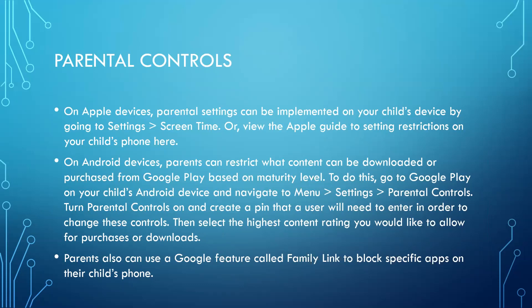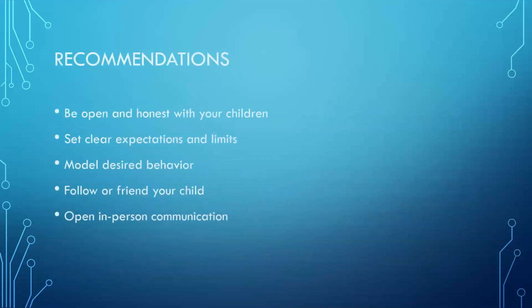Parents can also use a Google feature called Family Link to block specific apps on their child's phone. Now, I will say about restricting them — a lot of parents will say they're not going to let their child use any apps, but chances are their friends do, and you won't always be there to see exactly what your child is doing or who they're interacting with in real life — say they're at school, at a friend's house, at a birthday party, or playing sports. So you want to make sure you're talking to them about your expectations no matter what, because just saying they won't have an app on their phone doesn't mean they won't have any interactions with it through friends or other relatives.